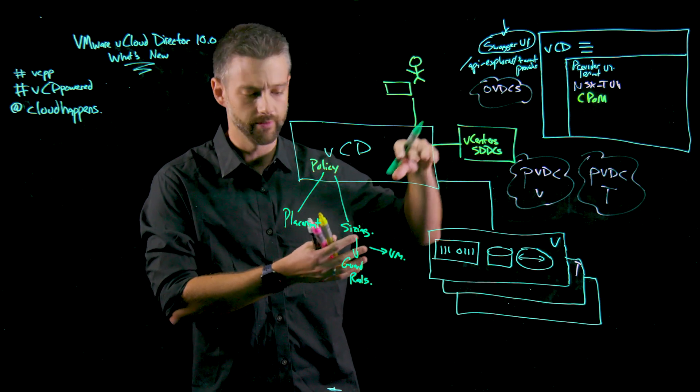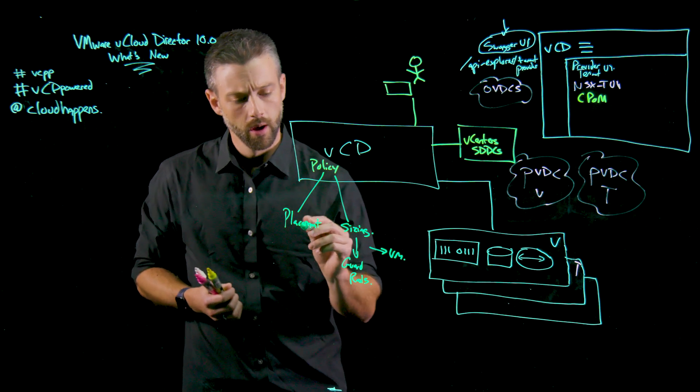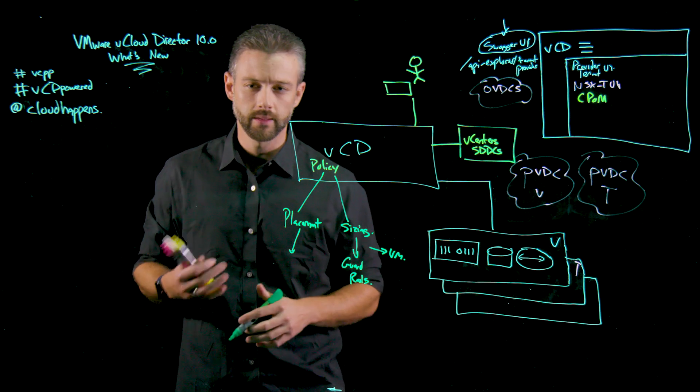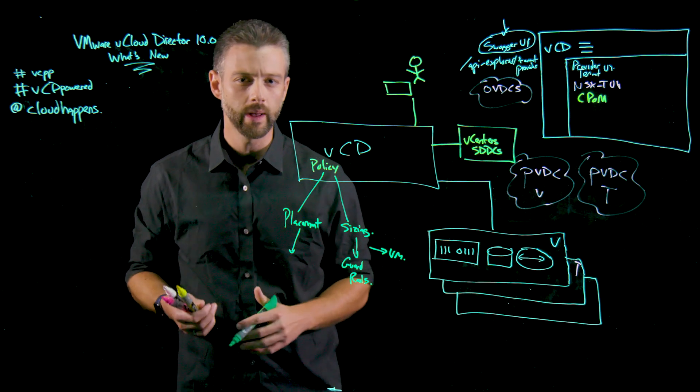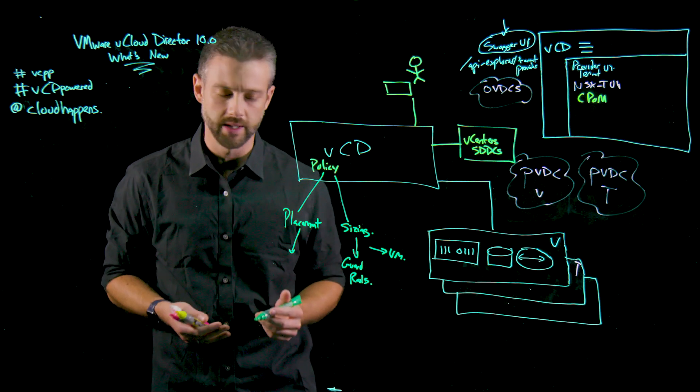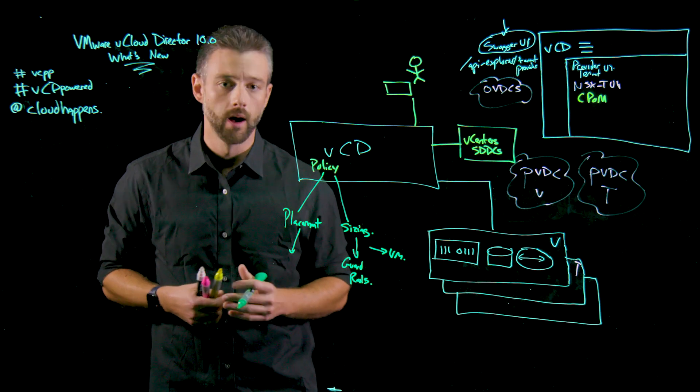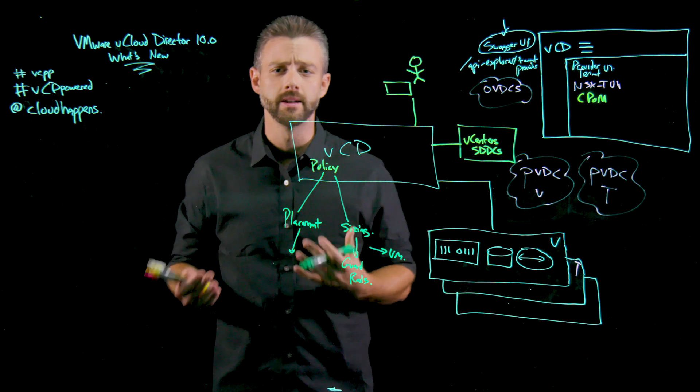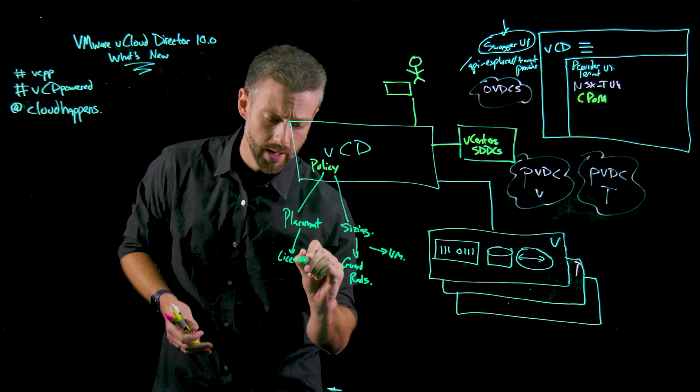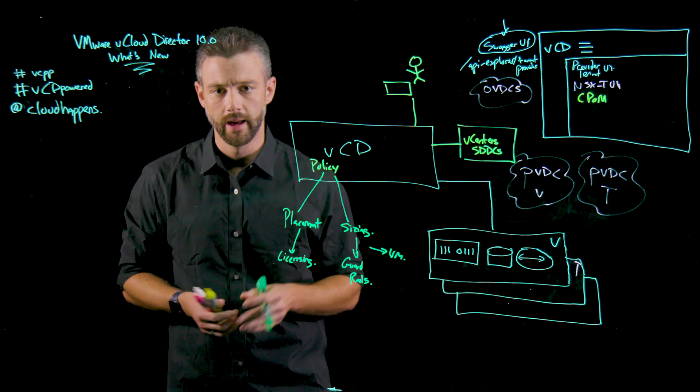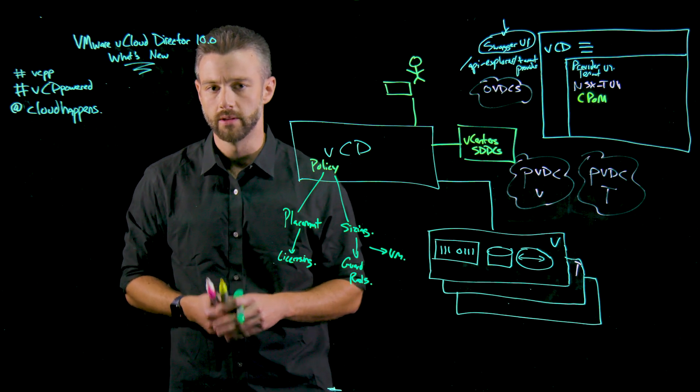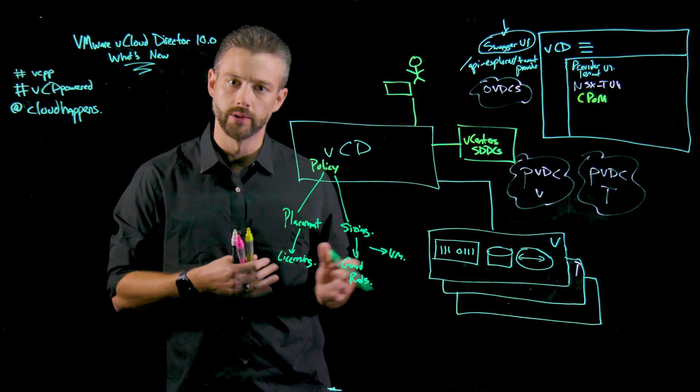And placement, and this again provides distinct granular control, this allows us that desired state of how do we actually want to place a virtual machine based on some kind of logic parameter. One good example and one of the reasons this is introduced is licensing requirements. So if I have a specific database that has to be licensed on a set of hosts, I can actually tie it or pin it to a specific set of hosts and it follows or it adheres to this policy. So these are some of the new functionality built into the user interface that are now introduced in 10.0.